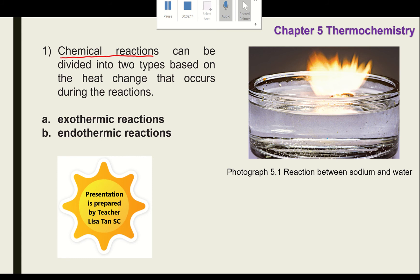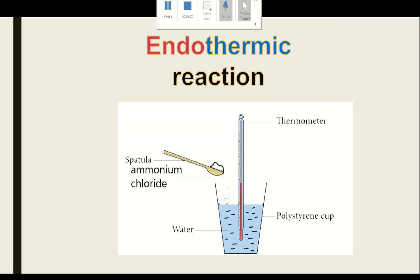Chemical reactions can be divided into two types based on the heat change in the reactions: number one, exothermic reaction, and number two, endothermic reaction. 'Thermic' means heat, and 'endo' means enter — so endothermic means heat is absorbed from the surrounding.